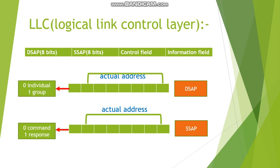If the address type bit is set to 0, then the actual address is an individual address; if it is set to 1, then the actual address is a group address. The SSAP address field also has 8 bits, of which 1 bit stores the command or response identifier and the remaining 7 bits store the actual address, which is always an individual address. If the command or response identifier bit is set to 0, it is a command; if set to 1, it is a response.